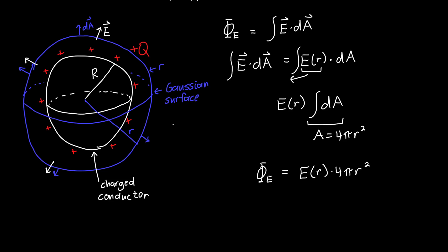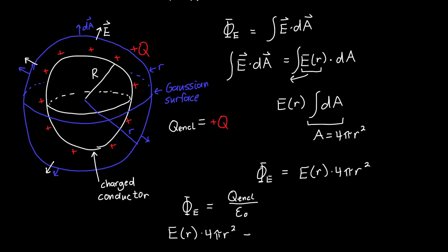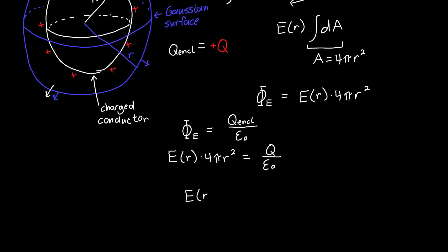In this case, because our Gaussian surface is larger than the conductor, it encloses all of the charge on the conductor's surface, so the charge enclosed equals plus Q. Applying Gauss's Law — flux equals charge enclosed over epsilon naught — we get E(r) times 4πr² equals Q over epsilon naught. Dividing both sides by 4πr² gives our final result: E(r) equals 1 over 4π epsilon naught times Q over r squared.